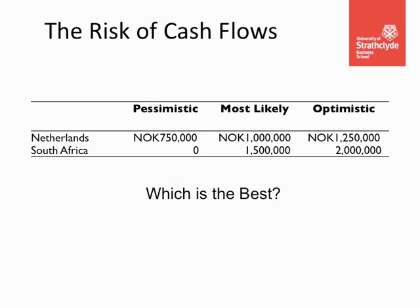There are three scenarios: pessimistic, most likely, and optimistic, measured in Norwegian krona. Under the pessimistic scenario, the Netherlands returns 750,000 krona while South Africa returns nothing. Under the optimistic scenario, South Africa returns significantly more than the Netherlands. The most likely scenario also favours South Africa with a higher cash flow. The question is which project is better — the Dutch or the South African project — and this will be answered in future videos.